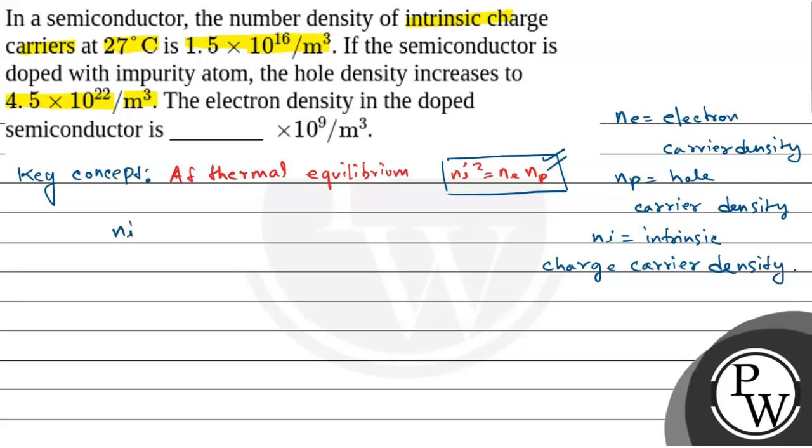Now Ni squared equals Ne × Np, right? What is given? That is Ni, the intrinsic charge carrier density at a given temperature constant, at 27 degrees Celsius. That is why we are applying this formula.